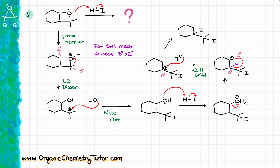If we had just used the shortcut and slapped iodine onto the carbons attached to oxygen, we would get the incorrect product. So while shortcuts are useful, I always recommend at least quickly running through the mechanism in your head, just to make sure you're not missing any rearrangements. Something like that is definitely fair game on a test — your instructor will try to catch you with a carbocation rearrangement where you least expect it.